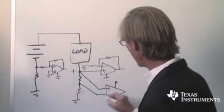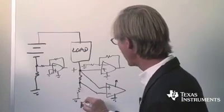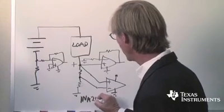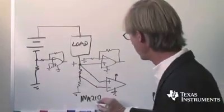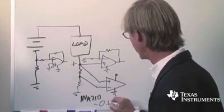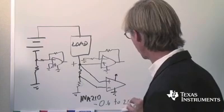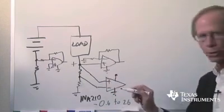Now in this case you might want to pick an amplifier like a TI INA210, and the reason you pick that amplifier is it has a common mode range of from minus 0.6 to 26 volts so that its common mode range includes zero.